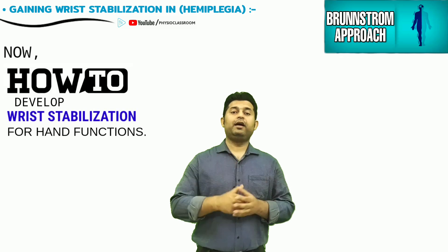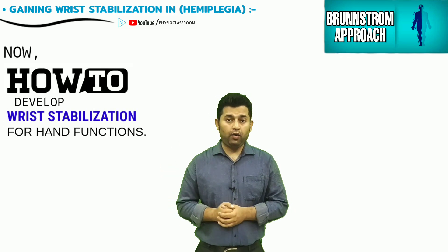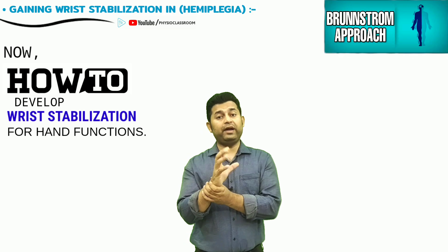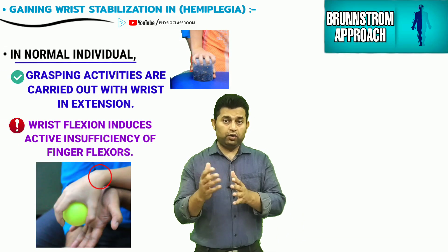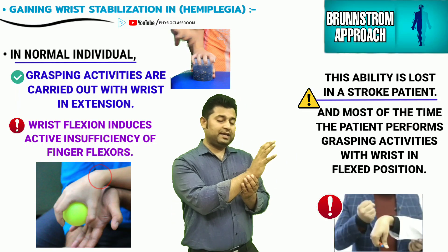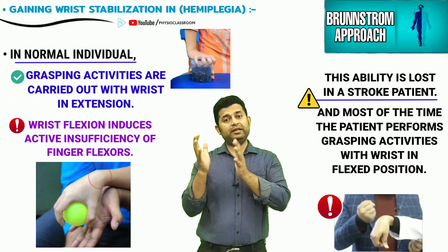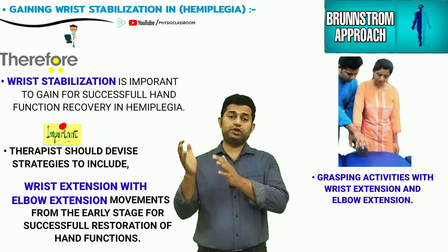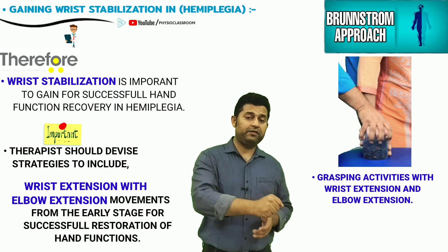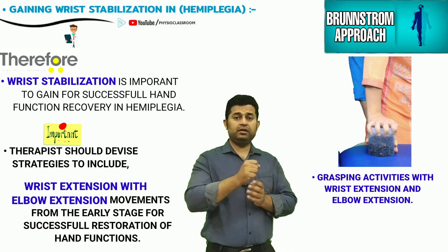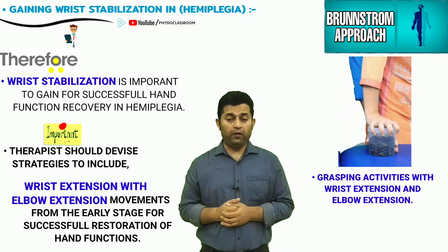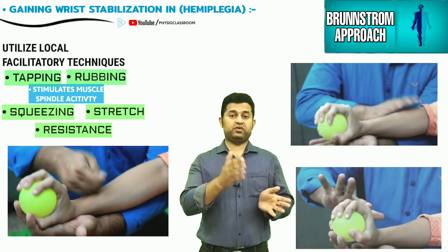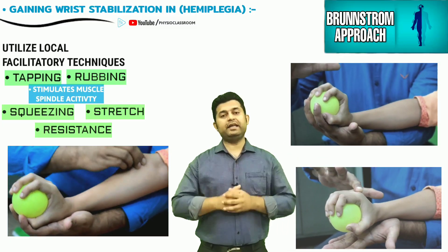In a normal individual there is a strong linkage between wrist extension and finger flexion movements, but in the stroke patient this linkage is lost. Therefore, from the early stages of rehabilitation, a physiotherapist should induce wrist extension movements along with pushing activities, and try to link wrist extension with elbow extension. Local stimulatory techniques — tapping, rubbing, squeezing, stretch, and resistance — should also be utilized to increase efferent discharges and the patient's voluntary effort in maintaining the wrist in extension.